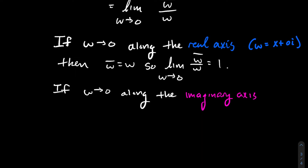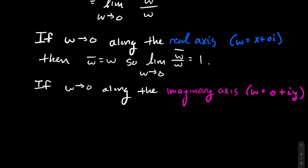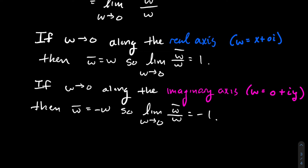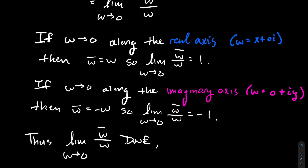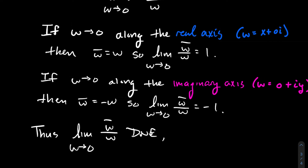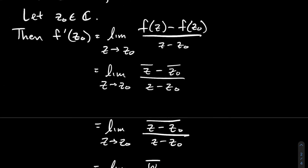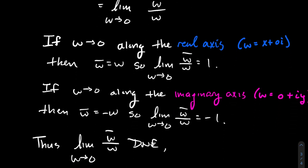Now let w go to zero along the imaginary axis instead. If w is on the imaginary axis, the real part is zero, so w = iy, and the conjugate is −iy = −w. So the limit along the imaginary axis gives w-bar over w = −w over w = −1. I need the limits to match for the overall limit to exist. I just found two directions giving two different limits — one and negative one — so the limit as w → 0 of w-bar over w does not exist.